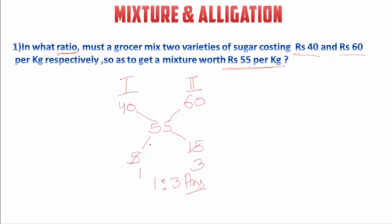Remember one thing friends: the mean value which comes here is always in between these two values — 55 is greater than 40 and less than 60. Always between these two values. Now move on to the second question.